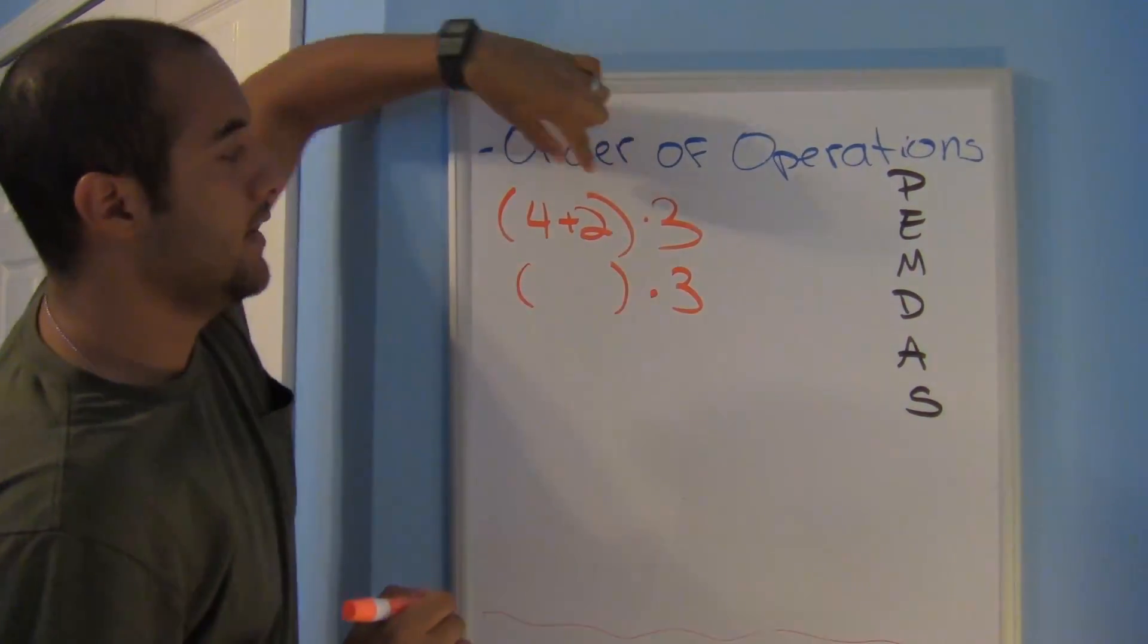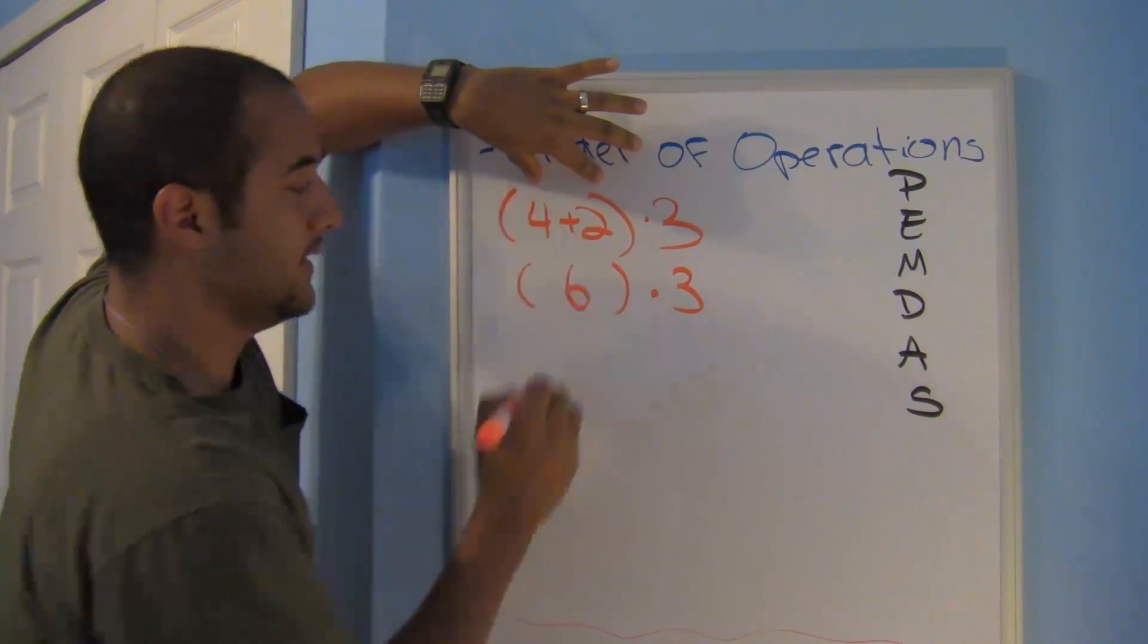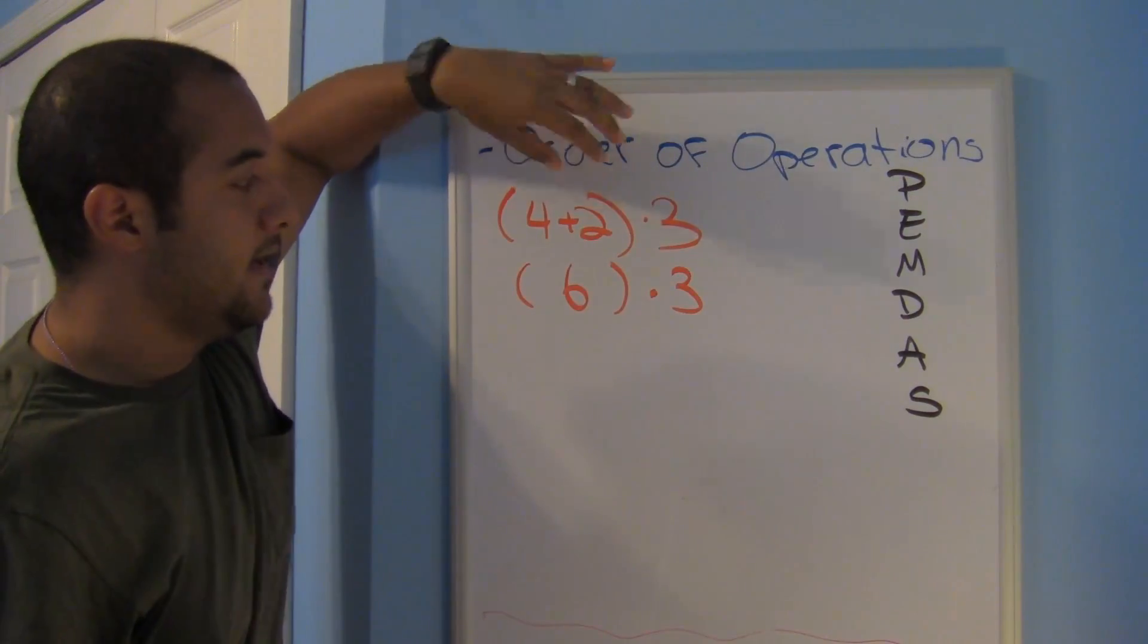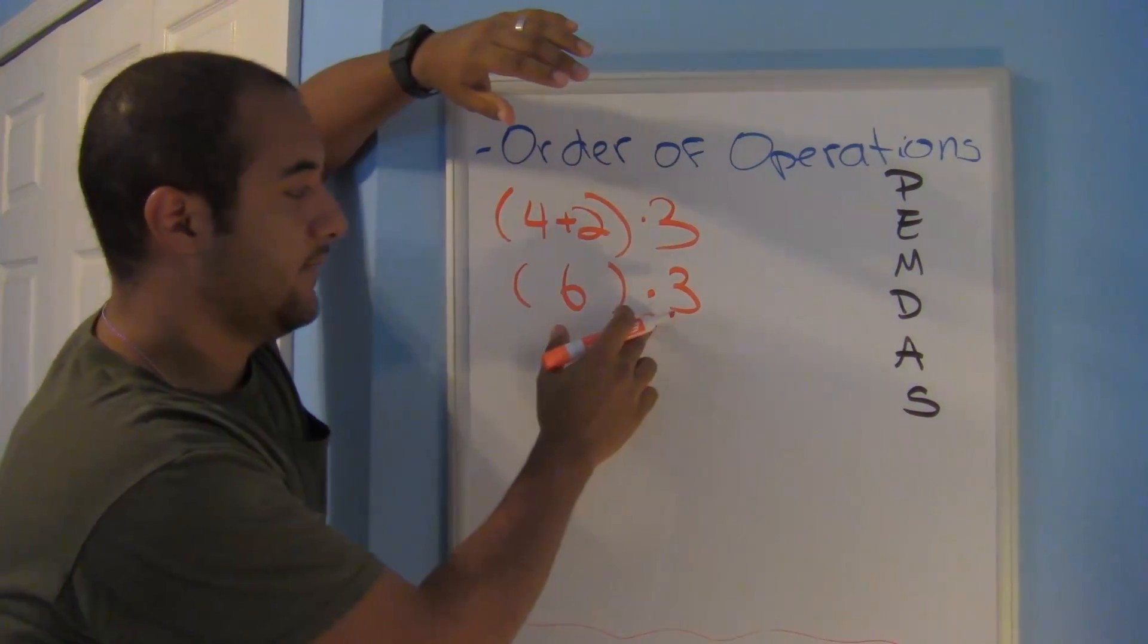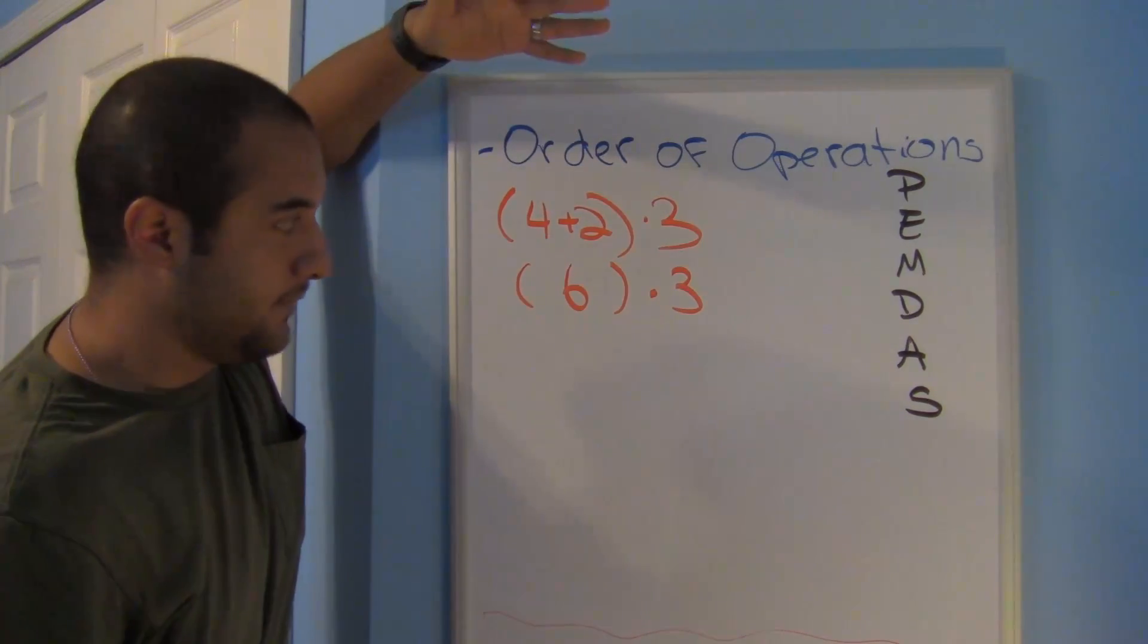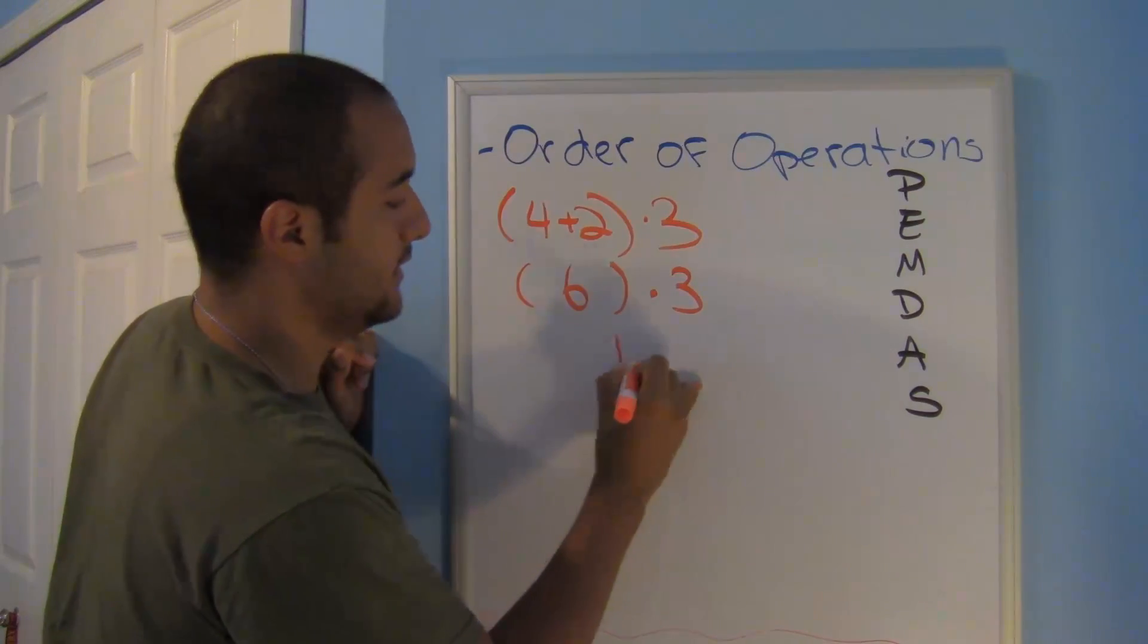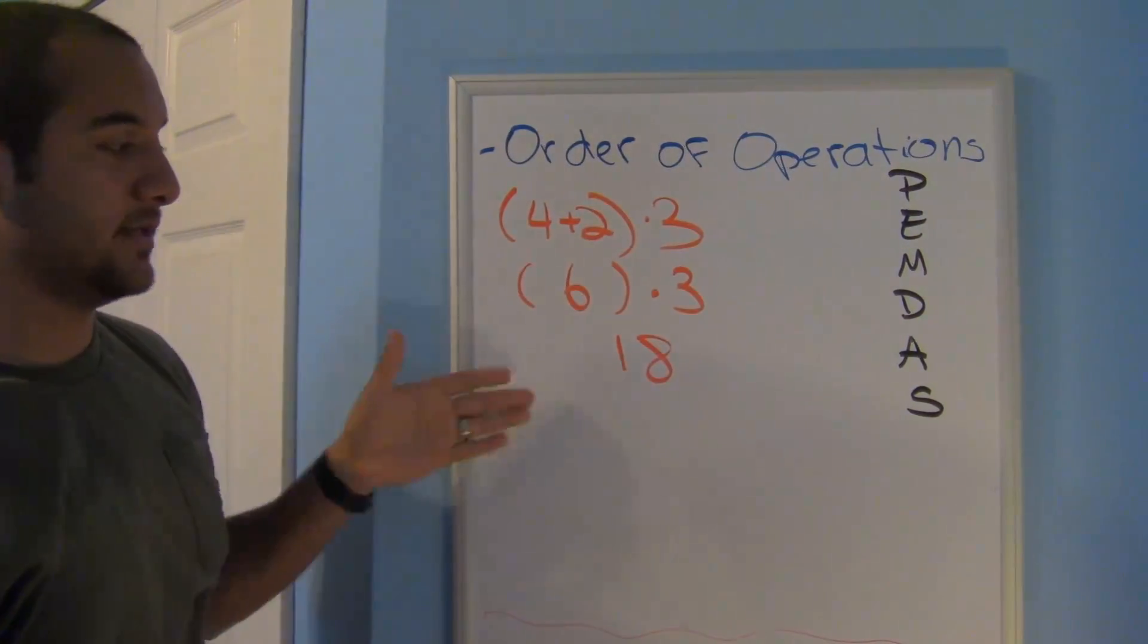And let's see. Inside the parentheses, I have 4 plus 2. So bring it down. 4 plus 2 is 6. Now all I have is 6 times 3. There's nothing else that I have. So 6 times 3 is 18. That's my answer.